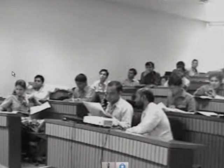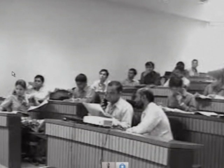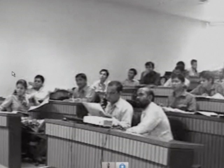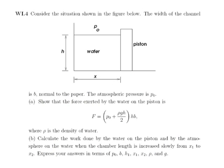The work done by water on the piston — as per our calculation it will be p0 plus rho g h by 2, into h b, multiplied by x2 minus x1. Is it correct? You have to be careful here: as x varies, h varies, so you have to write h as a function of x.